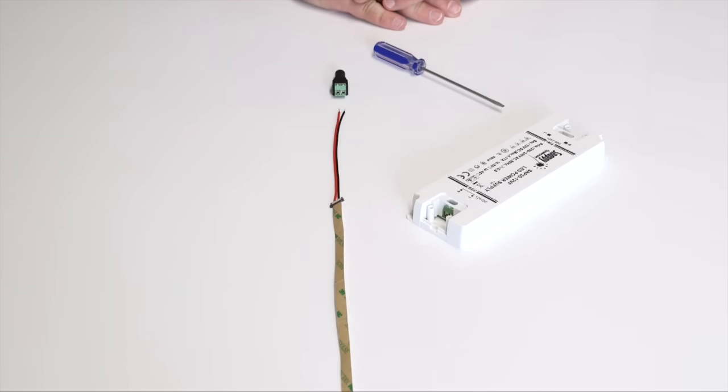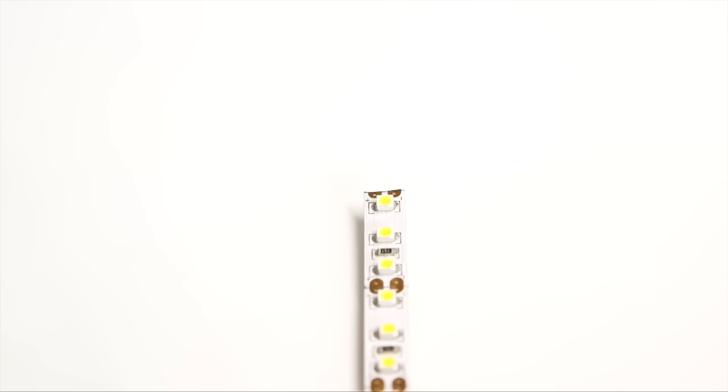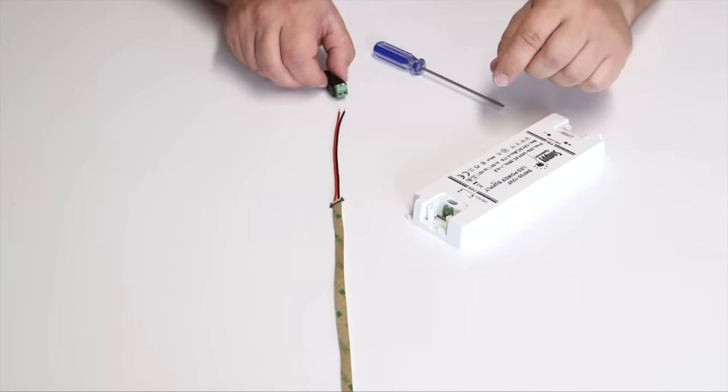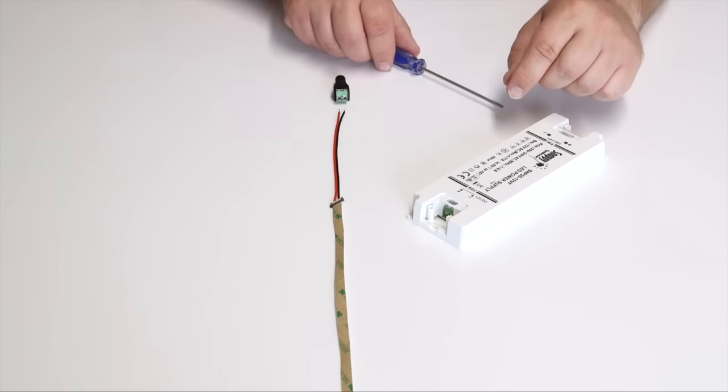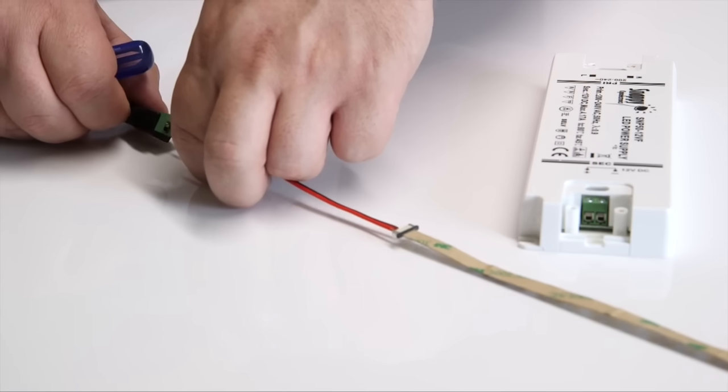You can see that order code C4349 is marked with plus and minus on its casing to indicate which way round the wires should be connected. The LED strip is also marked with plus and minus so make sure that the wire connected to plus on the LED strip is connected to plus on the C4349 and do the same for the minus wire.